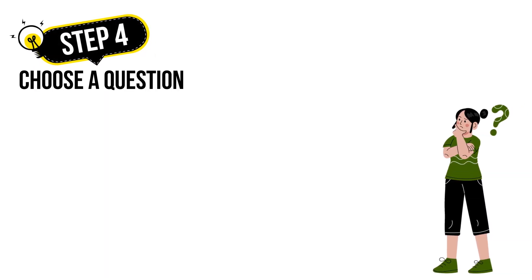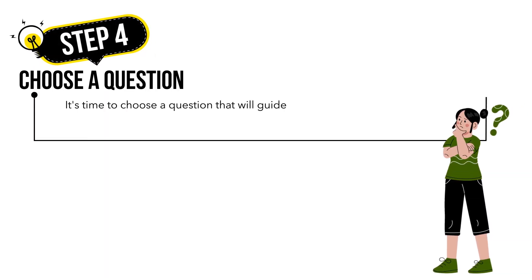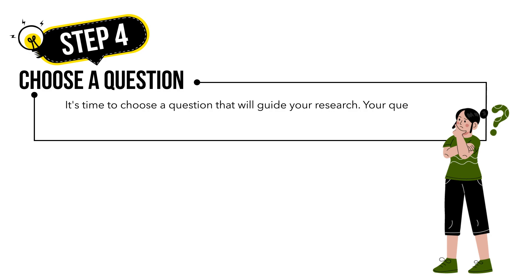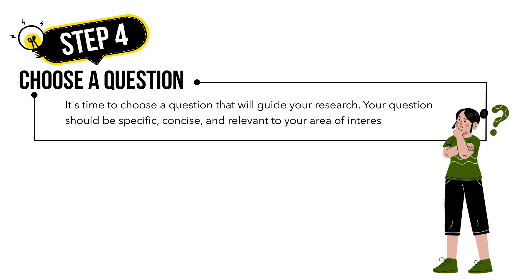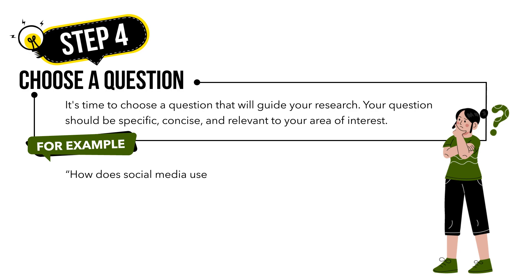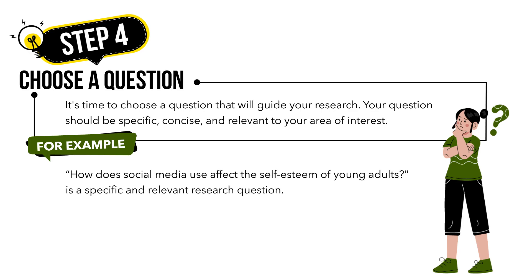Once you've narrowed down your list, it's time to choose a question that will guide your research. Your question should be specific, concise, and relevant to your area of interest. For example, 'How does social media use affect the self-esteem of young adults?' is a specific and relevant research question.